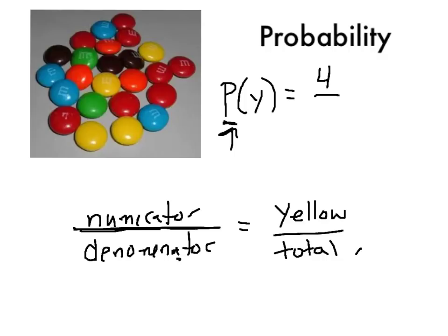We want to put that over the total. So we need to go back and count how many M&Ms we have in our little bag here. So 1, 2, 3, 4, 5, 6, 7, 8, 9, 10, 11, 12, 13, 14, 15, 16, 17, 18, 19, 20, 21, 22, 23, 24.